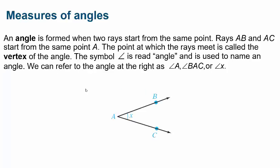So first, measures of angles. What is an angle exactly? An angle is formed when two rays meet. A ray starts from one point A and goes through another point, continuing on forever. So ray AB and ray AC both start from the same point A. The point at which the rays meet is called the vertex of the angle. We can refer to this angle as angle A, angle BAC — the middle letter is always the vertex — or just angle X.